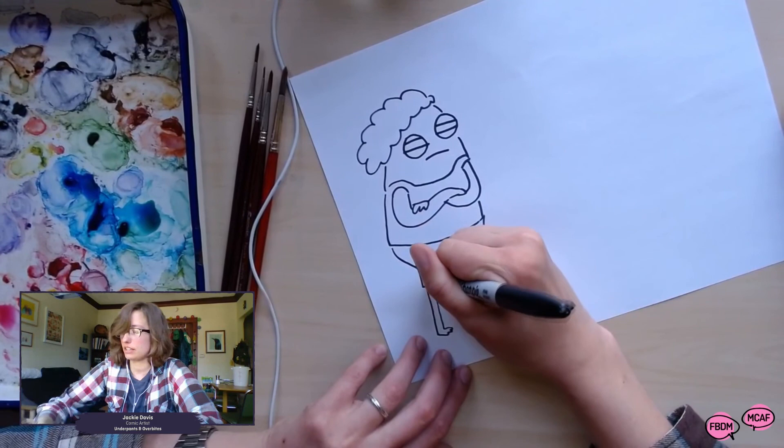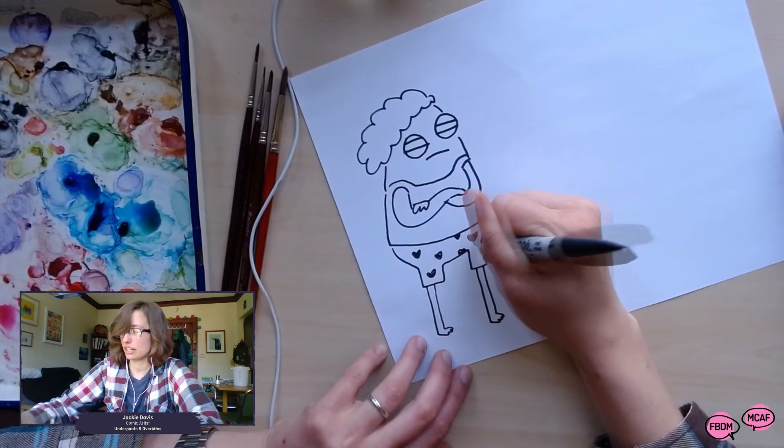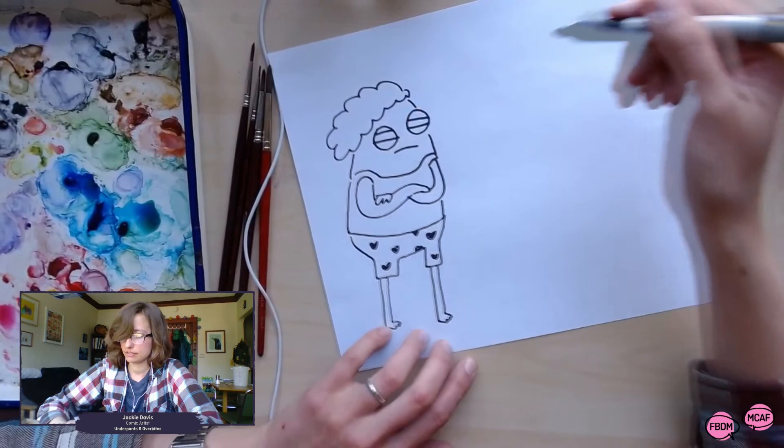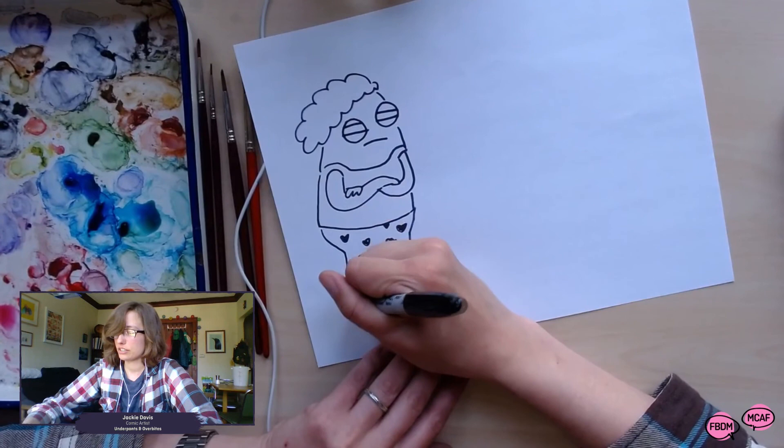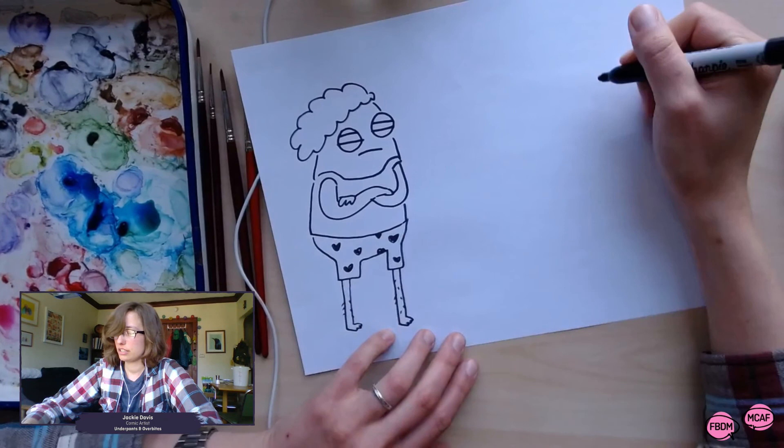And then I'm always tempted to draw the pupils, but I can't draw them until I draw the other character so we see where that character is. Let's make these legs a little hairy. And actually, I kind of want the other roommate to be a dog to enhance the tension.